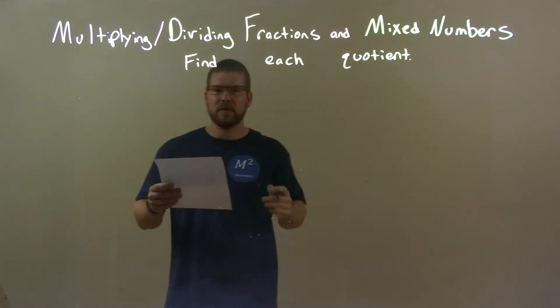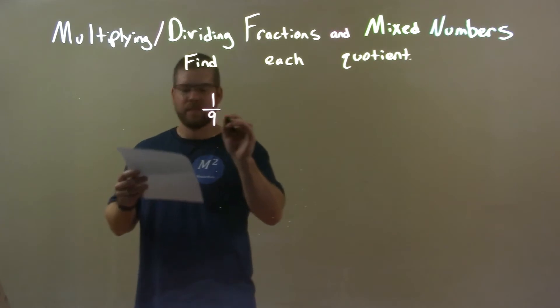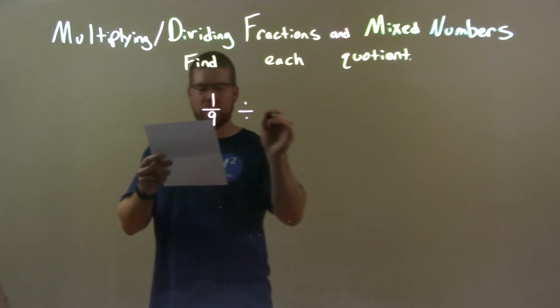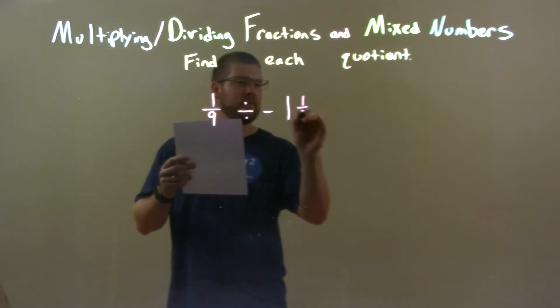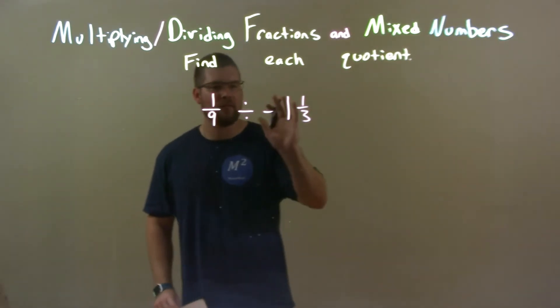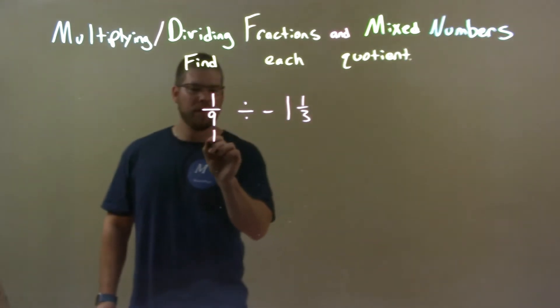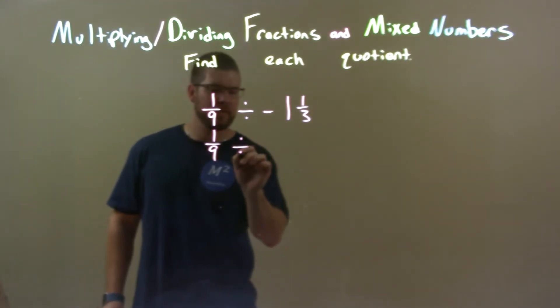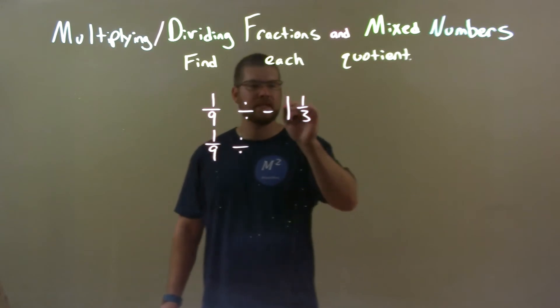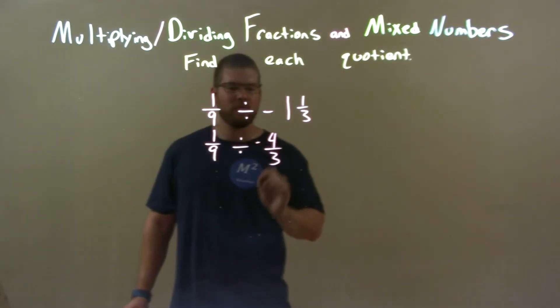So, if I was given these numbers, 1 over 9 divided by negative 1 and 1 third. First thing I like to do here is convert this second number to an improper fraction. So I'll keep the 1 ninth here on the left in division. But an improper fraction, 3 times 1 is 3 plus 1 is 4. So we have 4 thirds. Don't forget the negative.